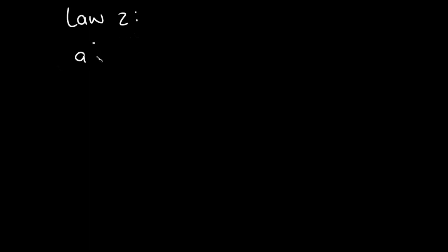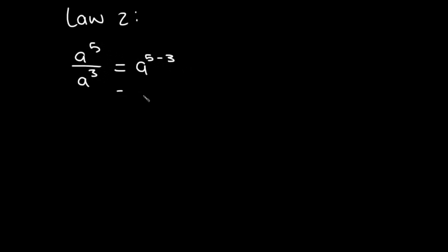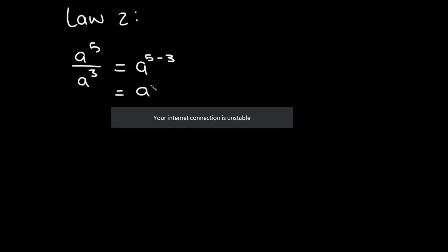Now looking at Law 2. For example: a to the power of five over a to the power of three. With this law, when you are dividing two terms and the bases are the same, you subtract the exponents — you subtract the denominator exponent from the numerator exponent. So it's five minus three, giving an answer of a to the power of two, which is a squared.